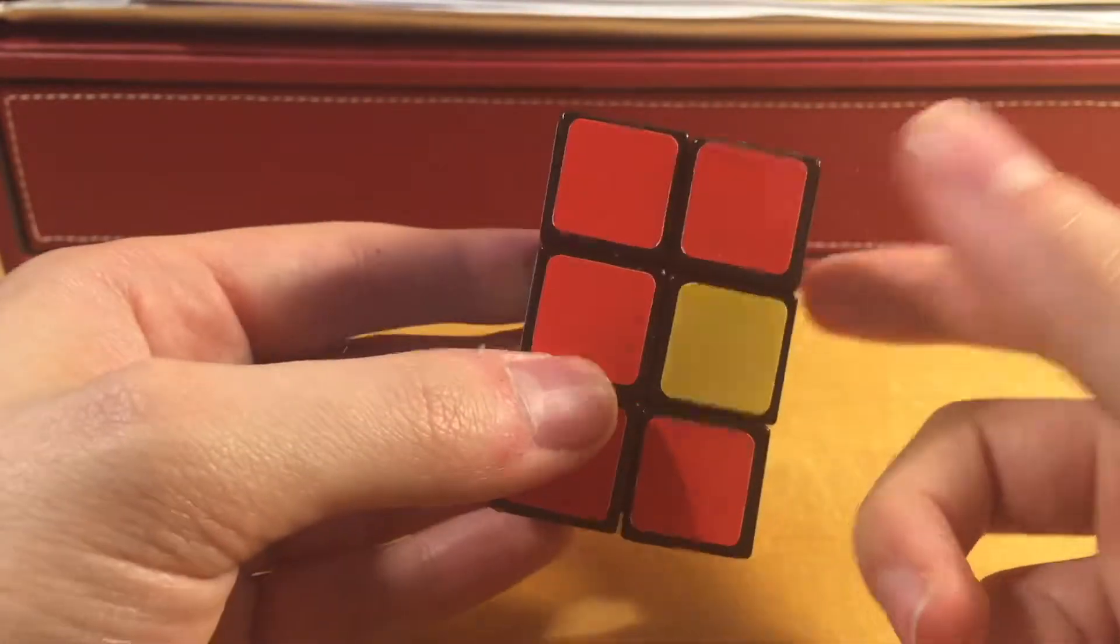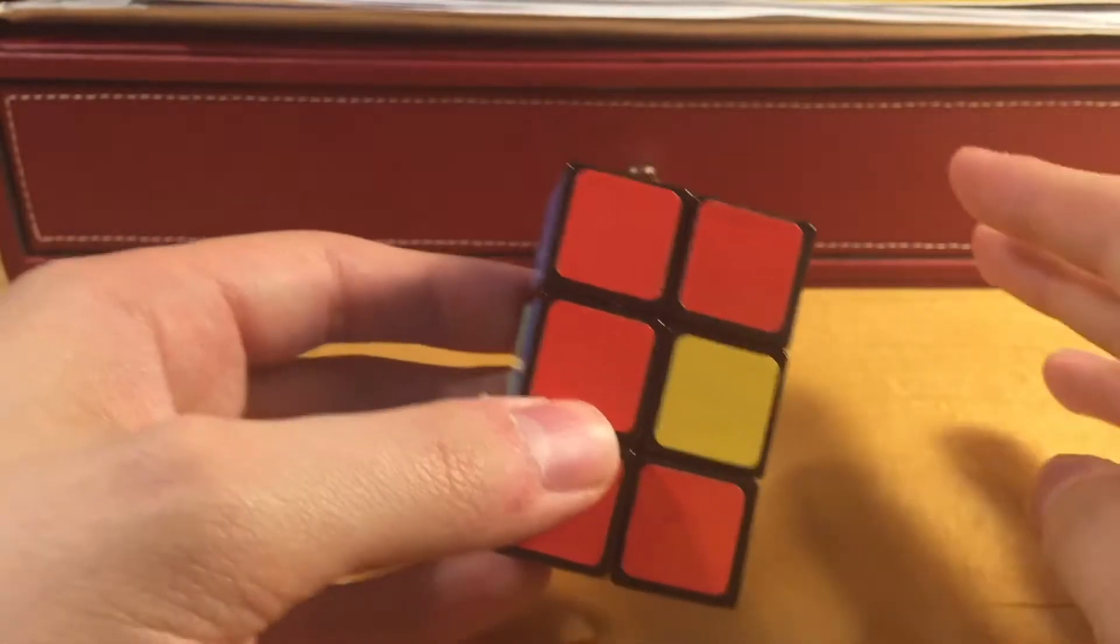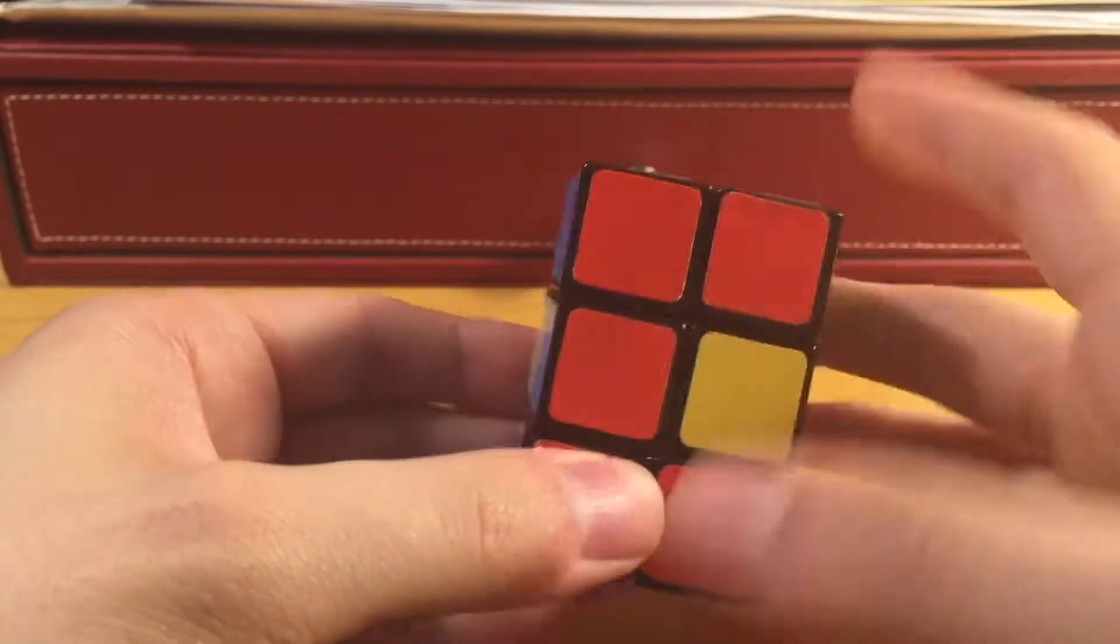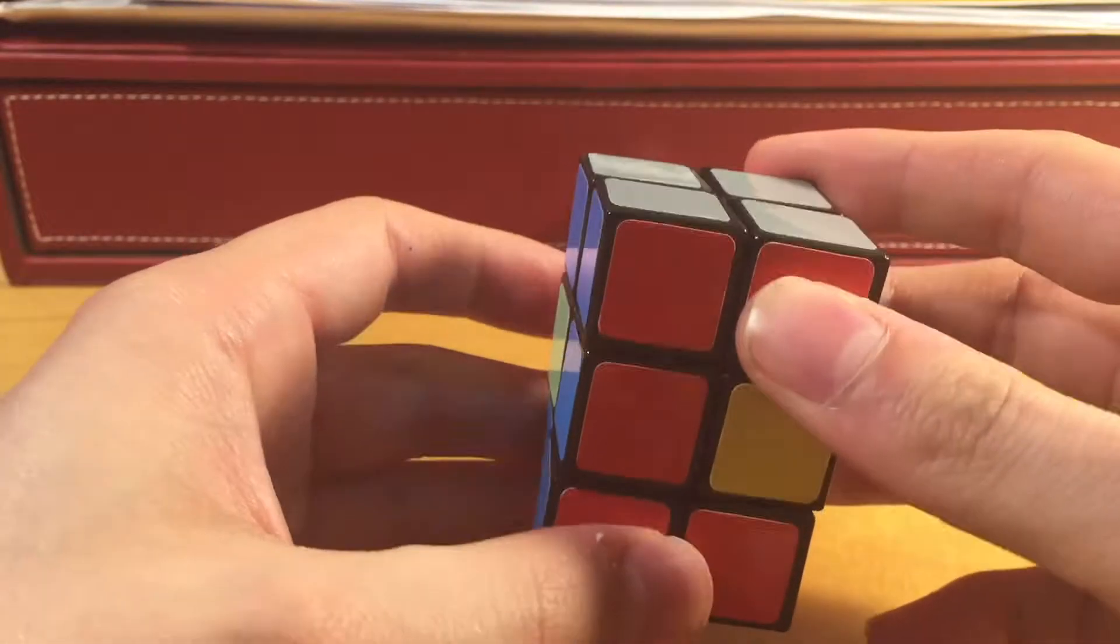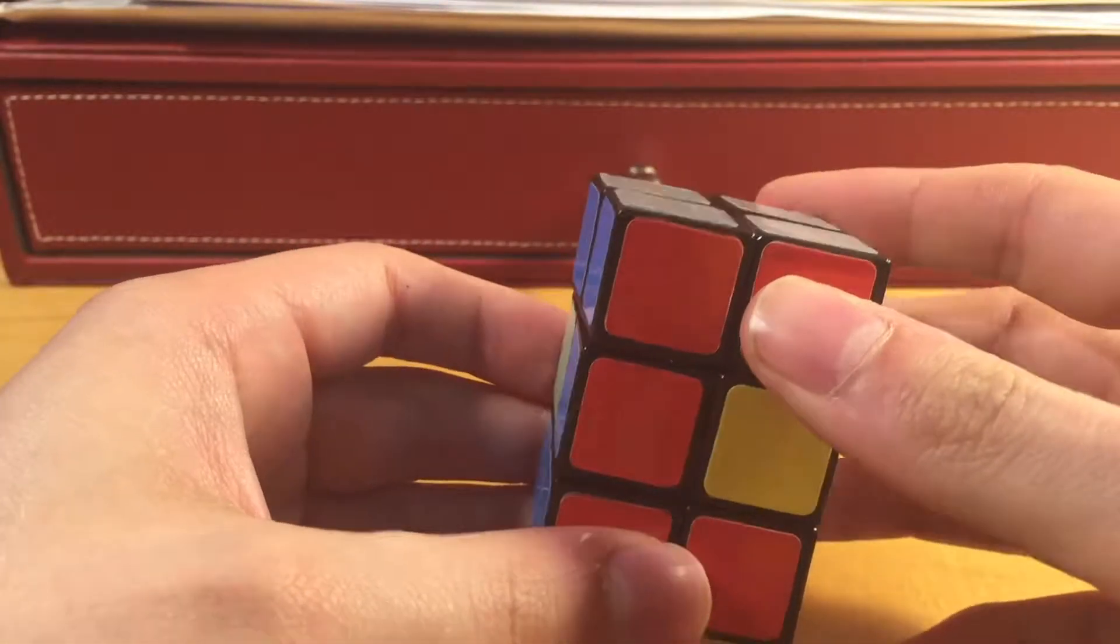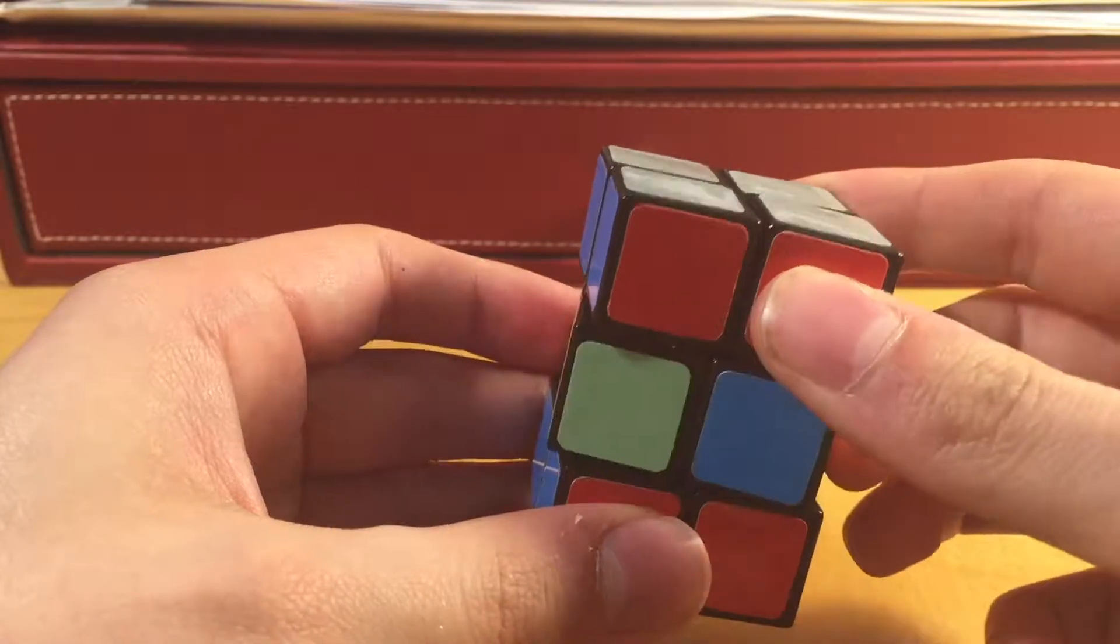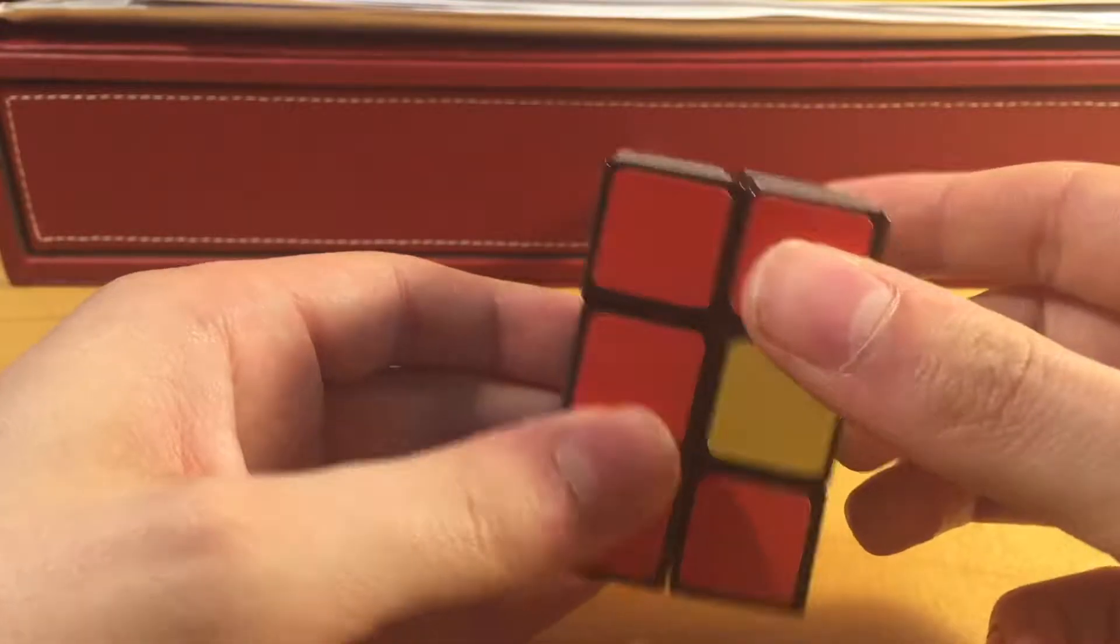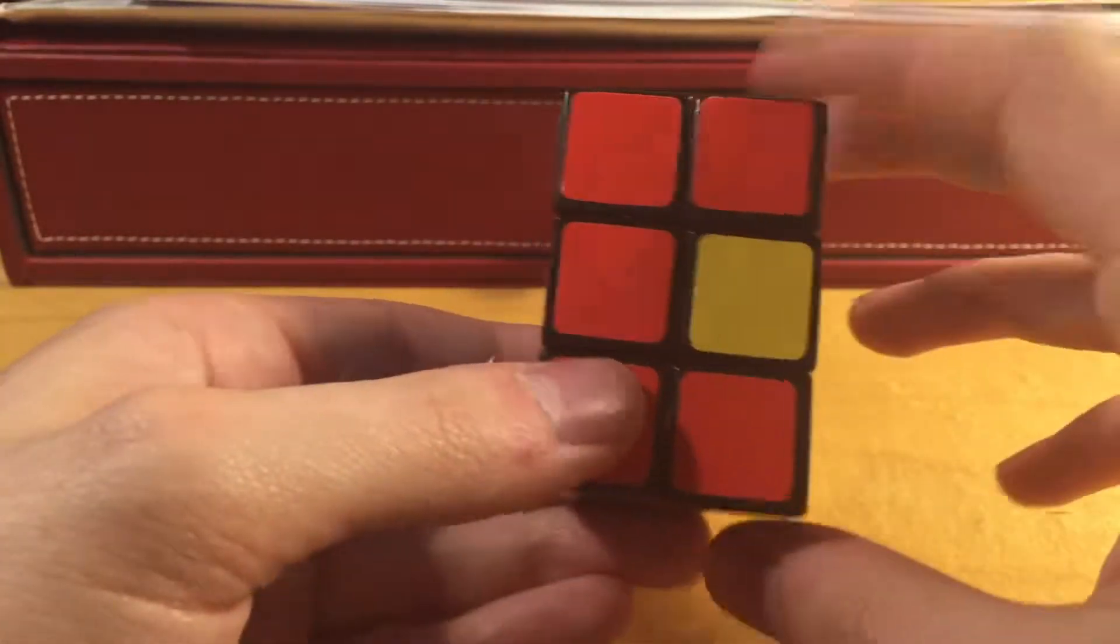So, when you have a case like this, you're going to either have to execute this algorithm one or two times, but it's a very simple algorithm. And before I do this, I want to first say that I'm going to be referring to an M slice. Doing this is an M, and doing this is an M prime. So, this is the following algorithm in order to cycle these edges.